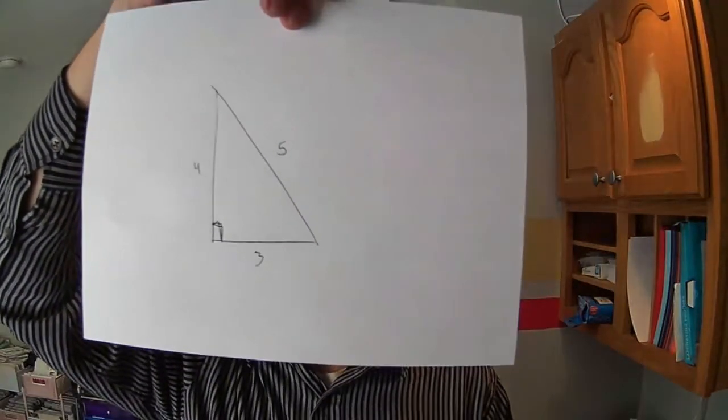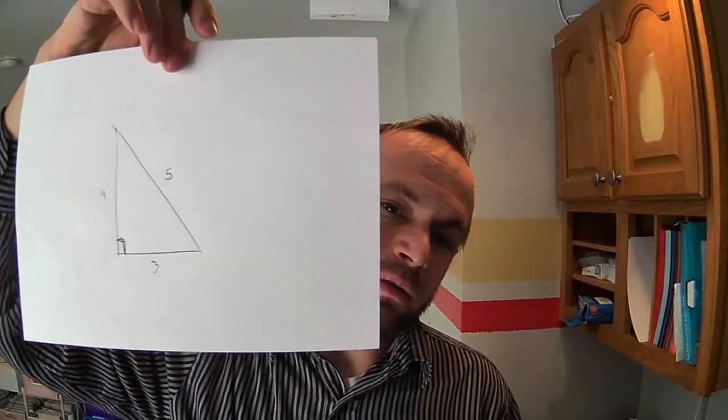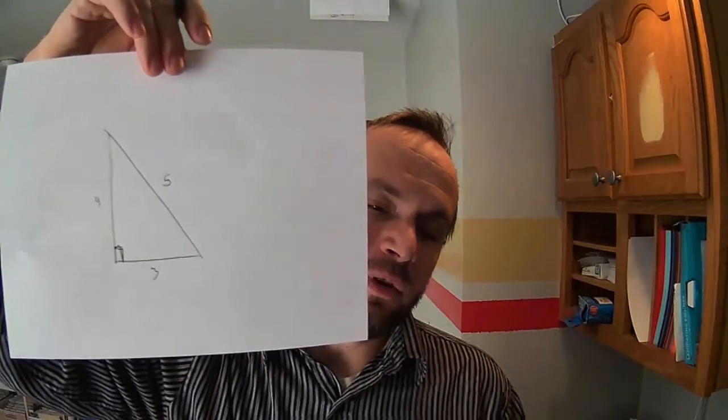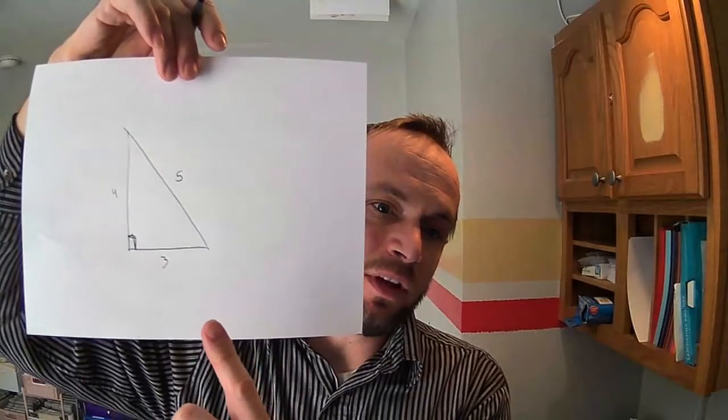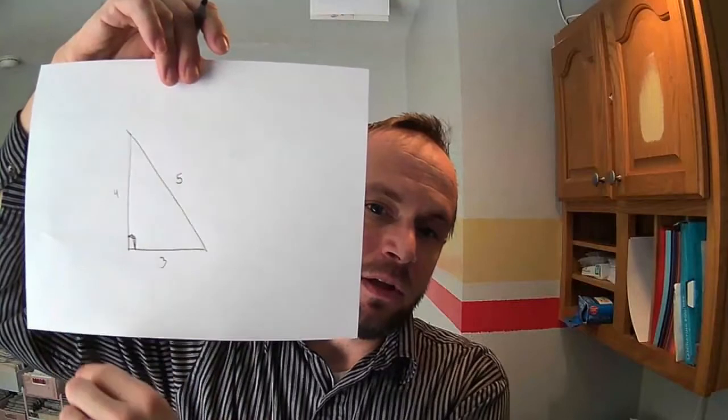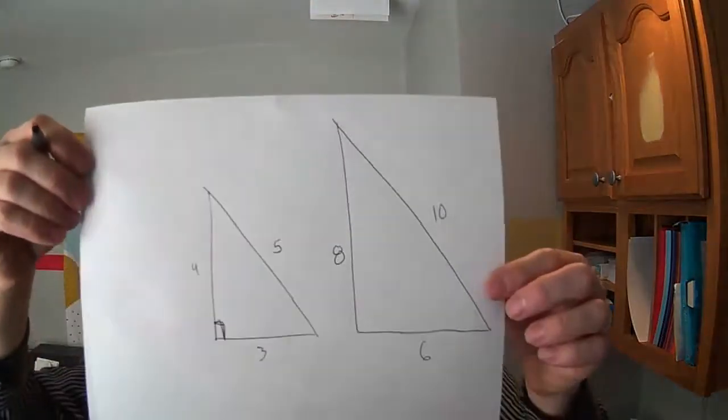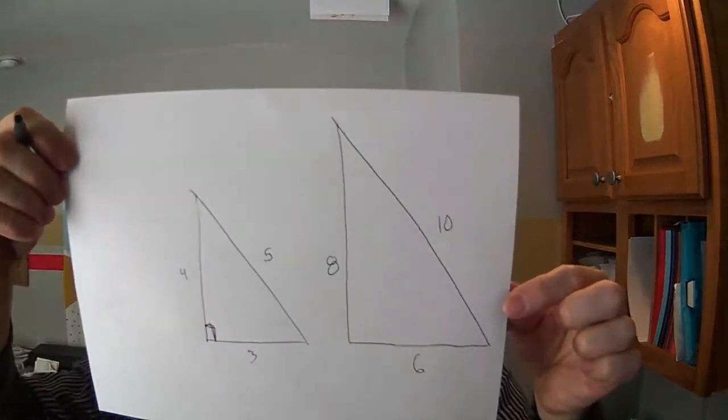Alright. Now, in the case of this 3, 4, 5 triangle, there's a neat principle in mathematics that says that if we scale or make bigger or smaller one side of this triangle, and we do the same factor, we scale it by the same multiplier on all of the sides of the triangle, we still preserve or have the same angles. So, in other words, if I were to create another triangle here, and these are not to scale, so do not expect them to be to scale.